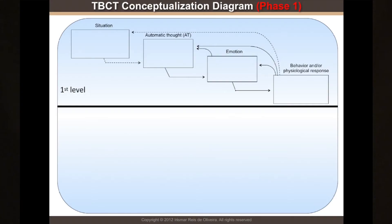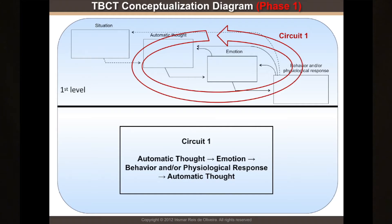In TBCT, the conceptualization diagram has three levels and three phases. In the first level we have the situation, the automatic thought, the emotion, the behavior and physiological responses, and in fact they complete kind of a circuit — I call it Circuit 1.